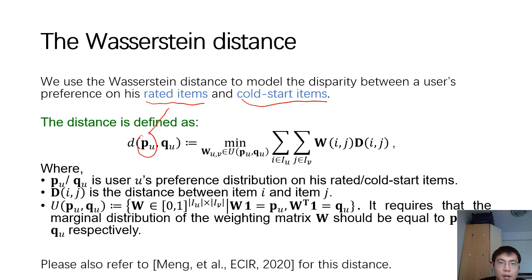Okay, this is the preference on rated items, and q_u is the preference distribution on cold start items. Their distance is defined as a weighted sum of the item distance, and this is the weighting matrix.